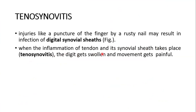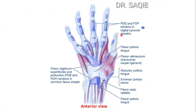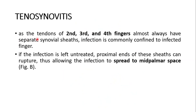The digit gets swollen and movement gets painful. These two tendons — flexor digitorum superficialis and flexor digitorum profundus — are in the digital synovial sheaths. As the tendons of the second, third, and fourth fingers almost always have separate synovial sheaths, infection is commonly confined to the infected finger.